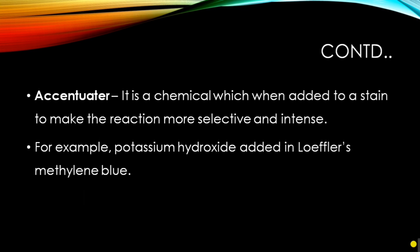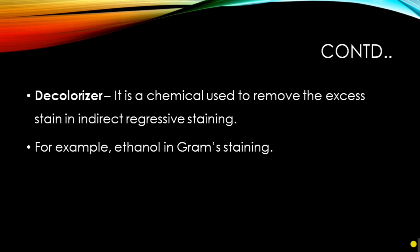Next is an accentuator, which is a chemical added to a stain to make the reaction more selective and intense. An example of an accentuator is potassium hydroxide when added to Loeffler's methylene blue. The last component is a decolorizer, which is a chemical used to remove excess stain in indirect or regressive staining. It is also commonly used in other staining procedures — for example, ethanol in Gram staining.